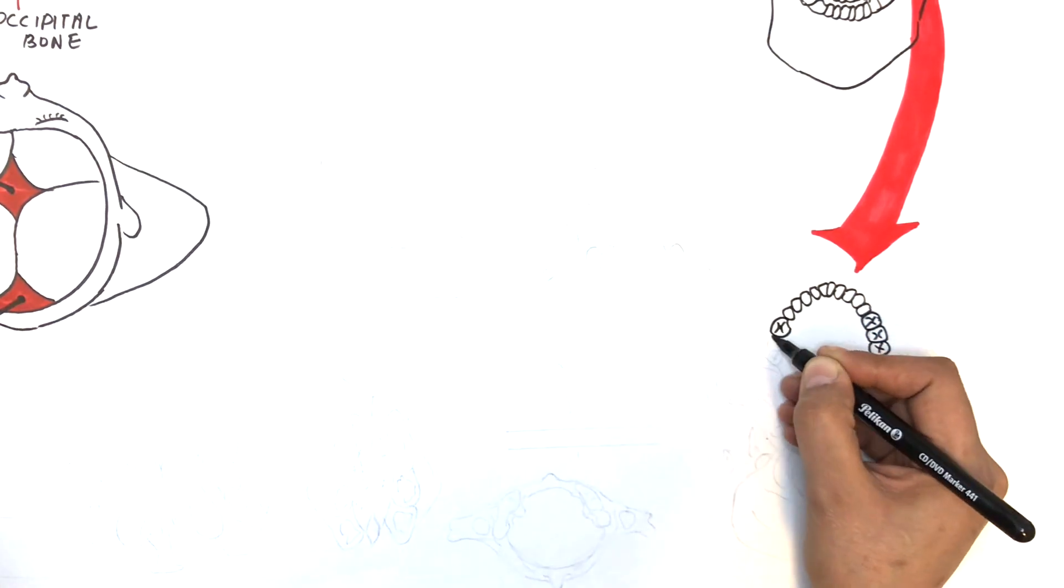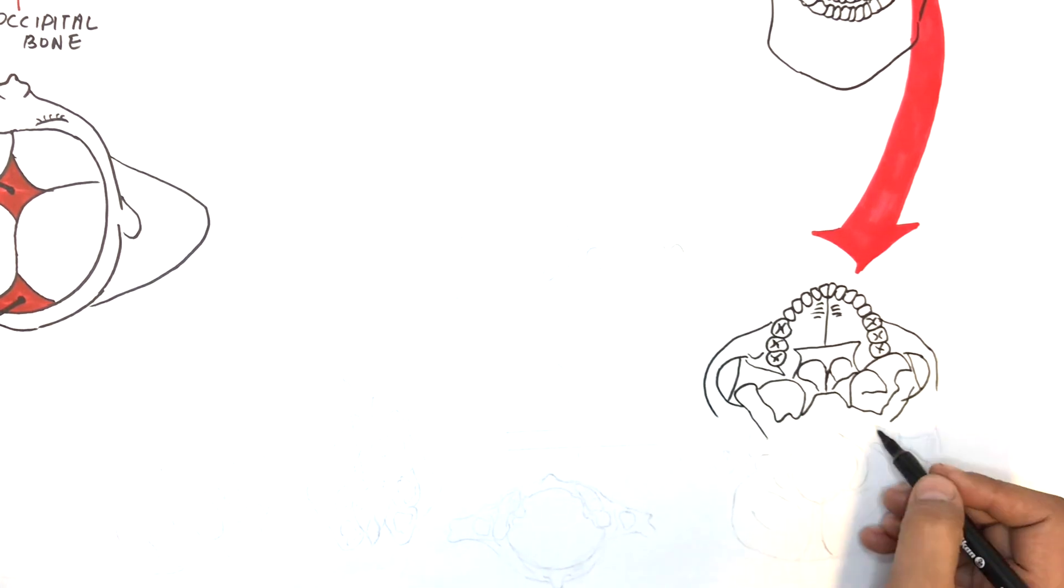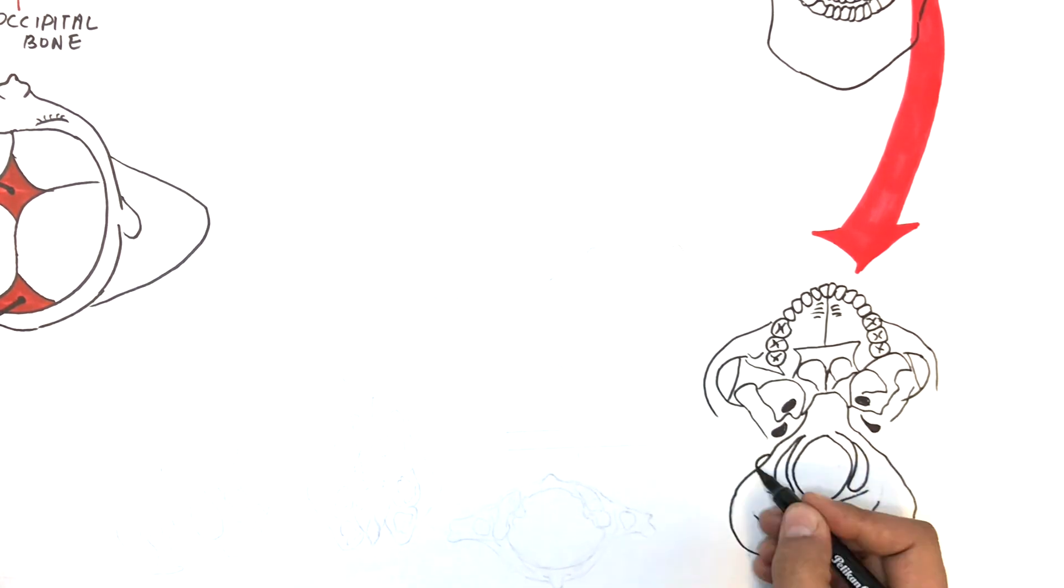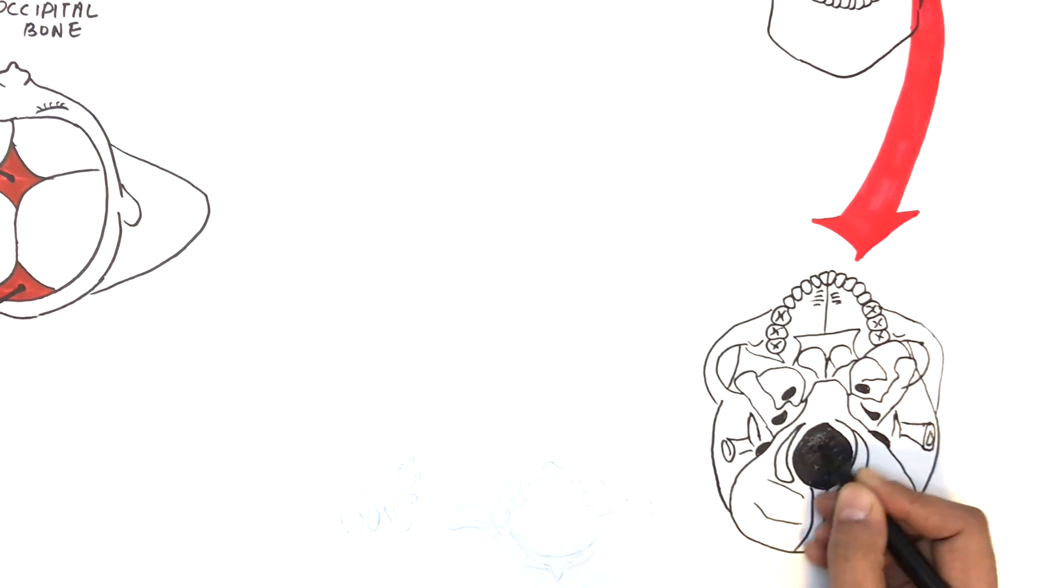From an inferior view, when the mandible is removed, some important features of the occipital bone seen here are the foramen magnum and the occipital condyles.